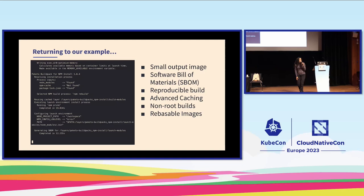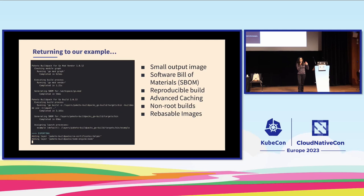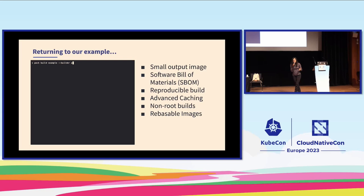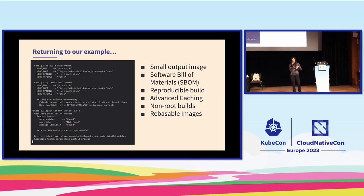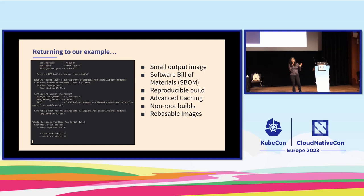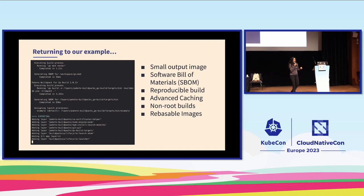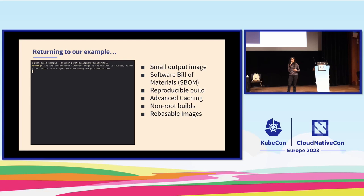Going back to the nice things about pack build — the small output image, SBOM, reproducible build — some of these may not be available when using Dockerfiles. Some of us are familiar with the limitations of caching with Dockerfiles. The rootless build is gone, and if you're familiar with the rebaseable feature of buildpacks, that may not be available anymore — Dockerfile-provided layers might not be safe to rebase. We view this feature as something to be used carefully. It's an escape hatch, but one that we hope will help people surmount the barrier of those first builds and could even be used to iteratively improve your build process.